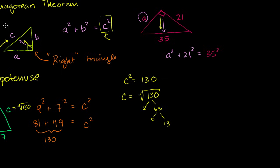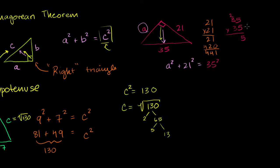Let's compute. 21 squared: 21 times 21 — 1 times 21 is 21, 2 times 21 is 42 — that gives 441. 35 squared: 35 times 35 — 5 times 5 is 25, carry the 2; 5 times 3 is 15 plus 2 is 17; then 3 times 5 is 15; 3 times 3 is 9 plus 1 is 10 — working it out: 5, then 12, then 2 bring down 1 — gives 1225.